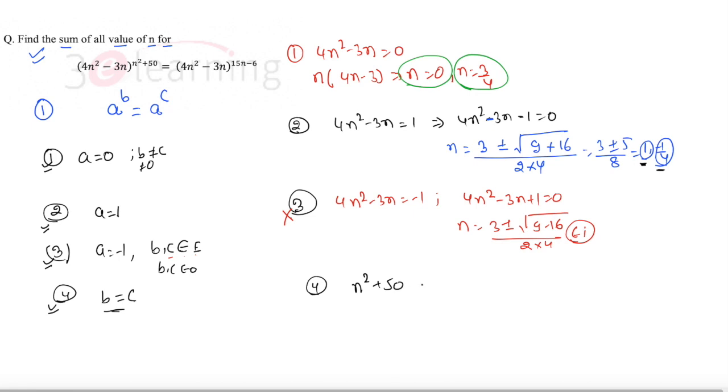Last but not least, we need to work on b = c, the power condition: n² + 50 = 50n - 6. This becomes n² - 50n + 56 = 0, which can be easily split.